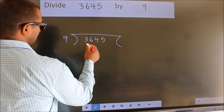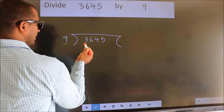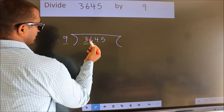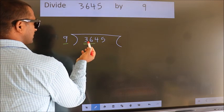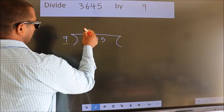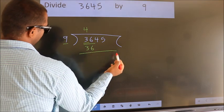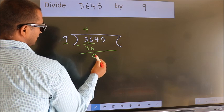Here we have 3. Here 9. 3 is smaller than 9, so we should take 2 numbers: 36. When do we get 36 in the 9 table? 9 times 4 is 36. Now we should subtract. We get 0.